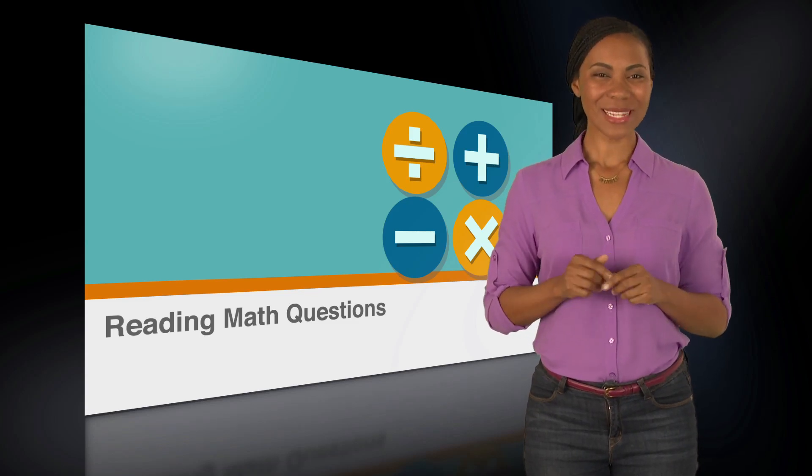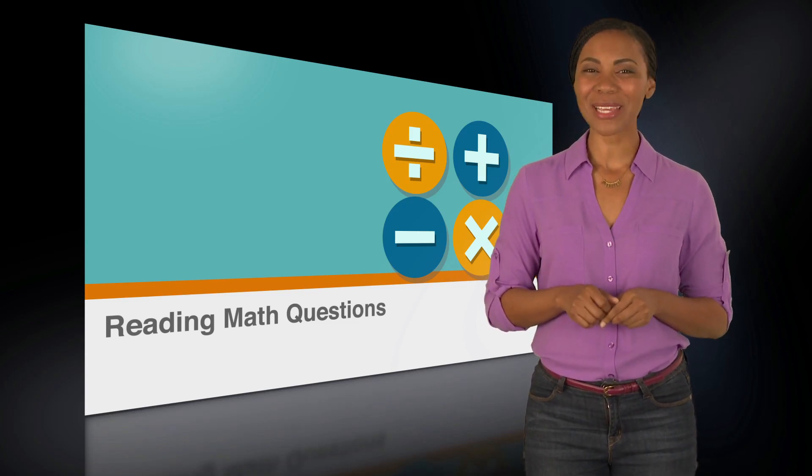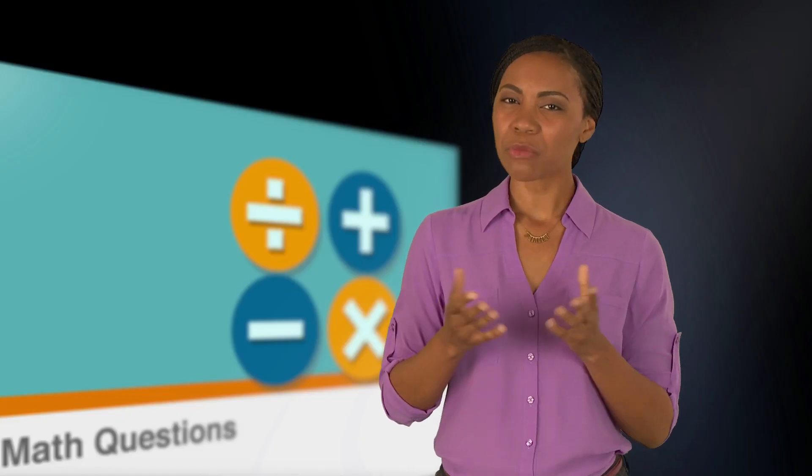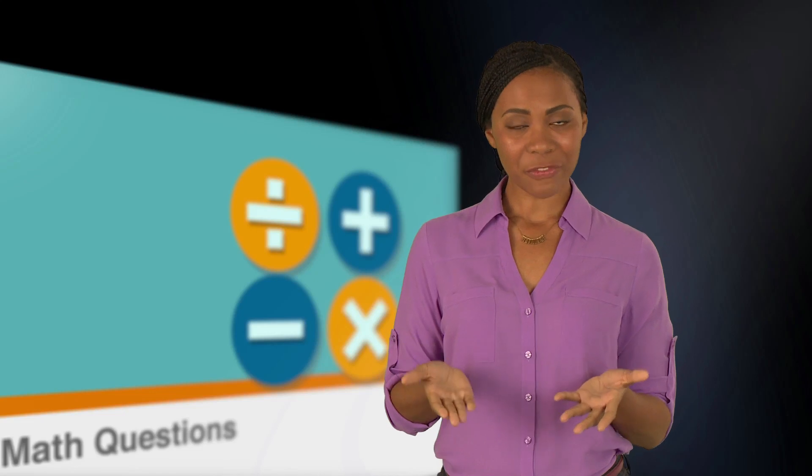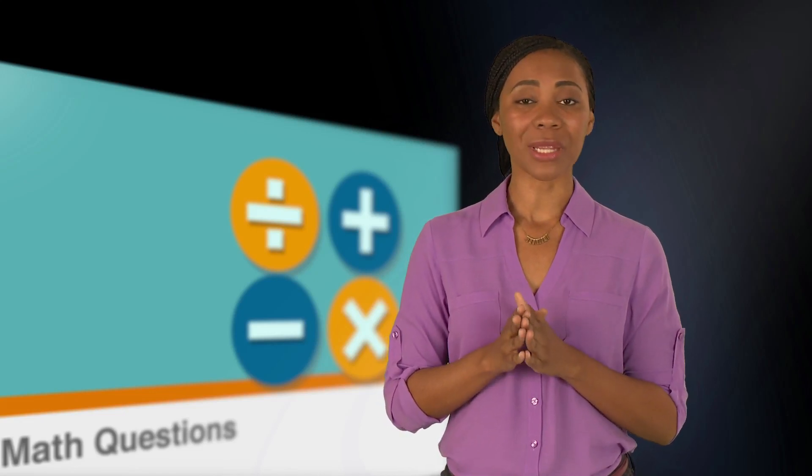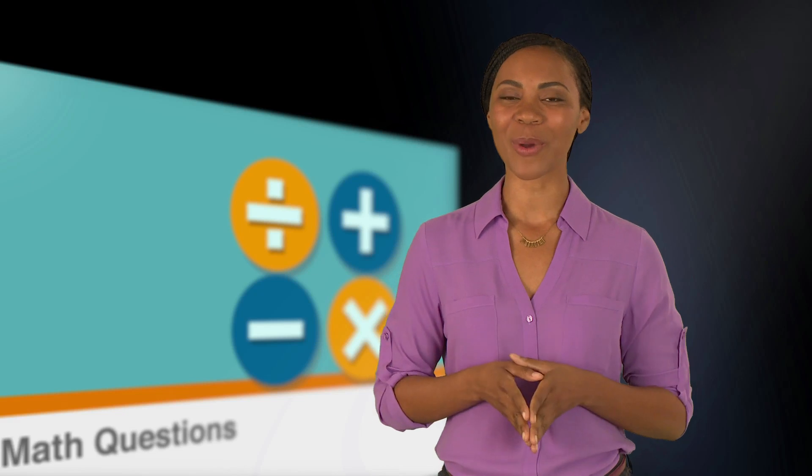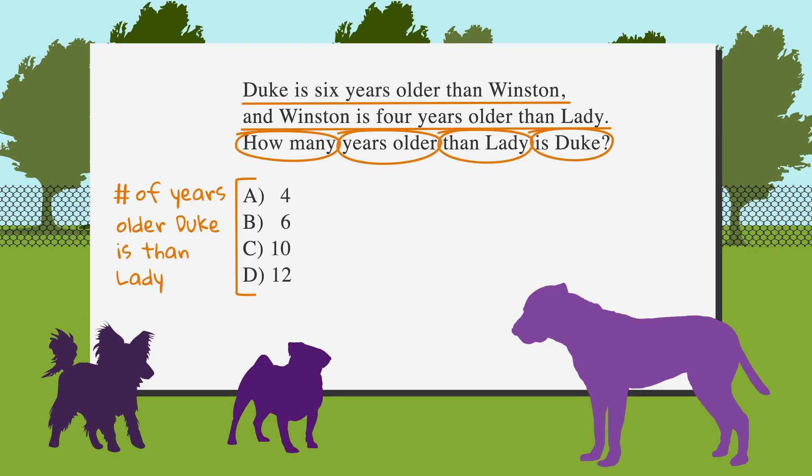While we're here, let's go ahead and solve this using the picking numbers strategy. We'll go over this strategy in more detail later in the course, but for now, all you need to know is that since we're only looking at the relationship between ages, it doesn't matter what the actual ages are, so we can pick a number that's easy to work with for Lady's age.